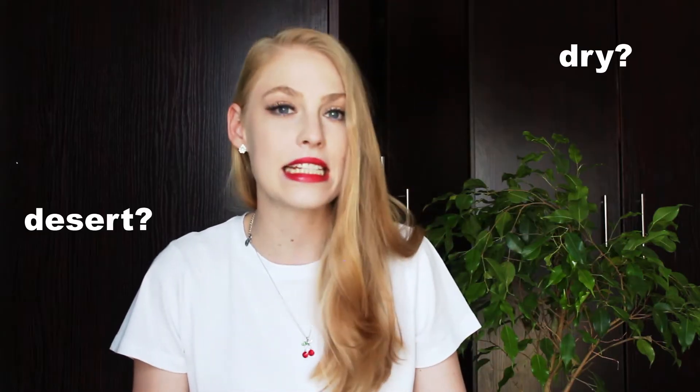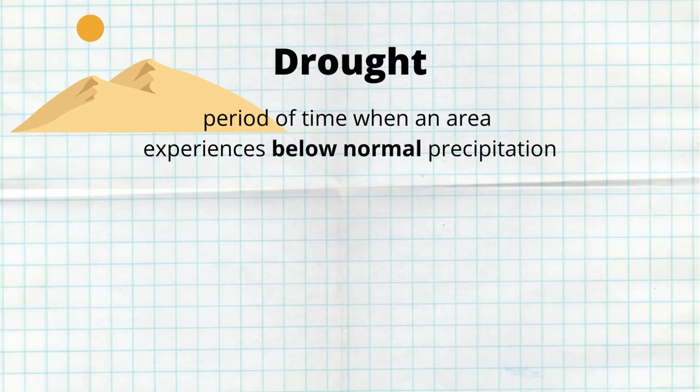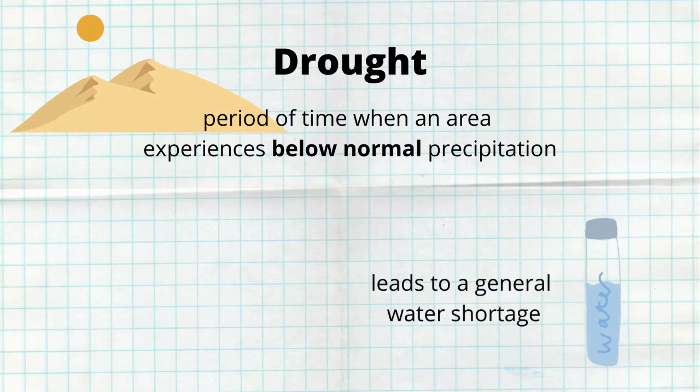What comes to mind when I say the word drought? Dry, desert, major water shortage? All of these are kind of true, but when we are talking about a drought we are actually talking about a period of time where an area receives less rainfall than expected. In other words, this area is experiencing less than normal precipitation, and this leads to a general water shortage.